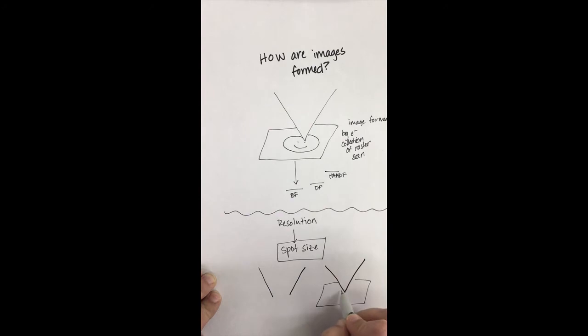If the beam is focused to a very fine point, then each position in the raster scan will be relatively small and therefore close together. If the beam is focused widely, that means less spots collected across the sample and a poorer resolution.